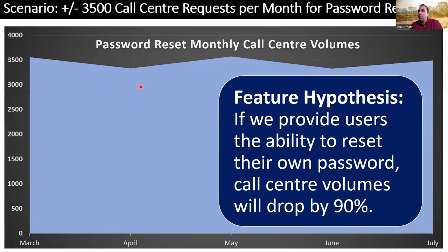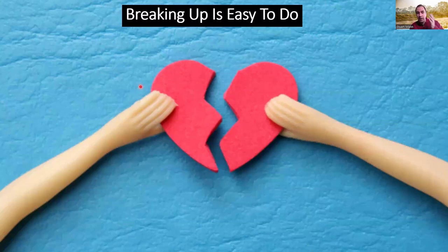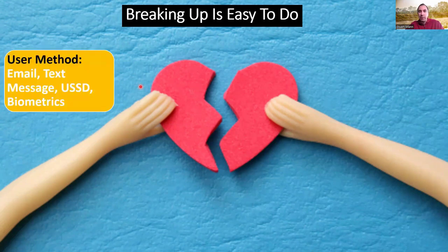Returning to password reset and our feature hypothesis — the next question is how can we break this into smaller features, and what impact would that have on our hypothesis? Lean 101 tells us that smaller items flow faster through systems. The smaller we can make our feature, the faster it flows through, and therefore the faster we get value. The good news is that when it comes to features, breaking up is easy to do.